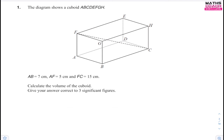So this first question: we have a cuboid, we are given some lengths, and we've been asked to calculate the volume of this cuboid to three significant figures. There are two ways you can do this. Whenever you have a 3D diagram like this, there's a formula you could use, but for understanding and clarity I'll show you a method that goes through all the different parts, calculating individual lengths. It's important you understand what's going on.